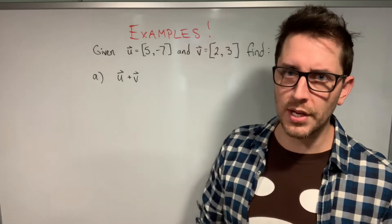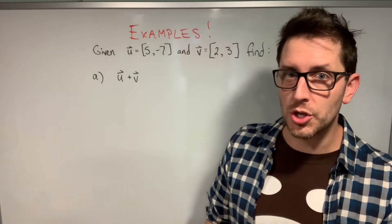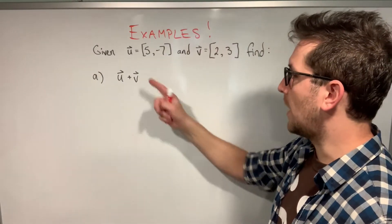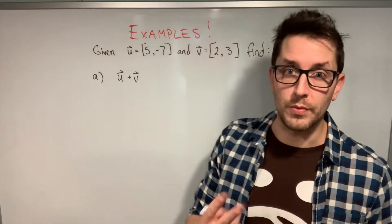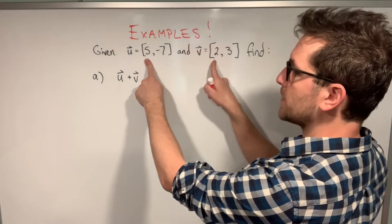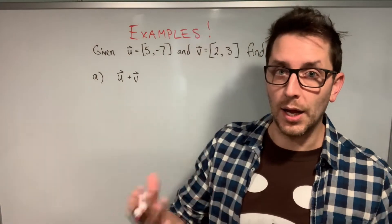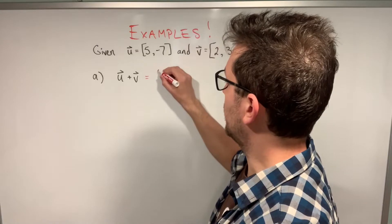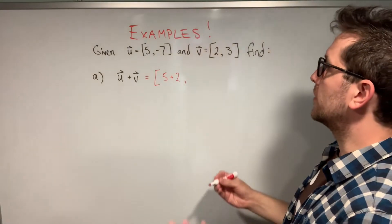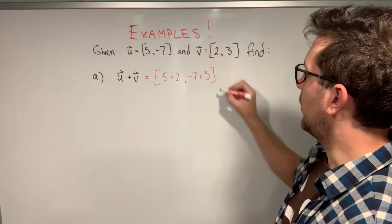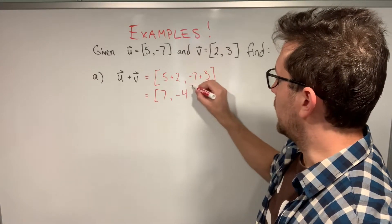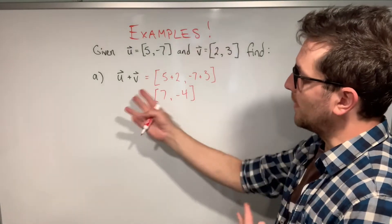Let's look at a few more mixed examples. With u = (5, -7) and v = (2, 3), we want to find u plus v. We add the first components: 5 plus 2, and the second components: negative 7 plus 3. That gives us 7 for the x component and negative 4 for the y component. So u plus v equals the Cartesian vector (7, -4).